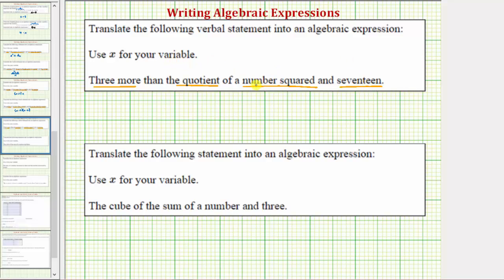of a number squared and 17. And we're using the variable x for the number. So the number squared would be x squared. And therefore the quotient of the number squared and 17 is x squared divided by 17.